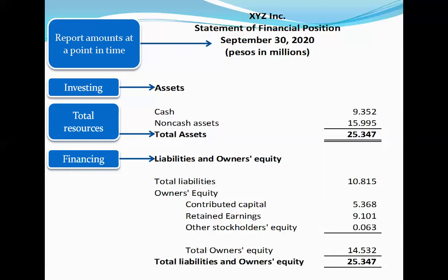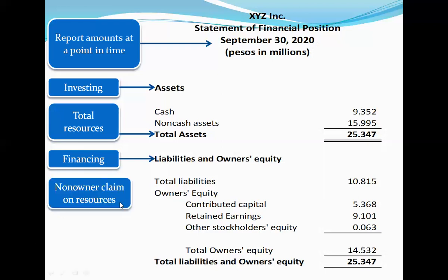We distinguish between these two financing sources for a reason. Borrowed money entails a legal obligation to repay amounts owed — the total liability of 10.815 million pesos entails such a legal obligation, and failure to do so can result in severe consequences for the borrower. Equity financing, on the other hand, entails no such obligation for repayment. So liabilities represent non-owner claims on resources, and owner's equity represents owner claims on resources.